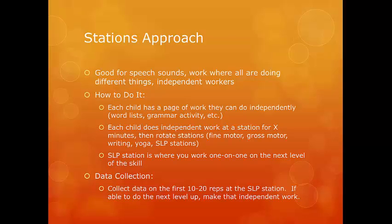At your station, you work one-on-one with each child on the next level of the skill they can currently do independently. If a child has been practicing a sound in isolation, you start working on it in syllables. If they can do syllables with a little prompting, you bump them up — show them how, and that becomes their new independent work for the remaining stations. Take data on the first 10 to 20 repetitions at your station, then send them on their way. You can also send their independent work home as practice.